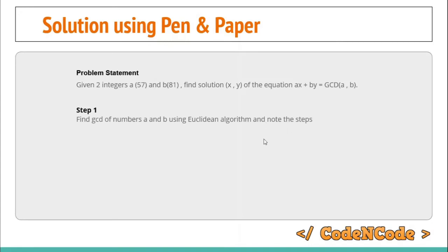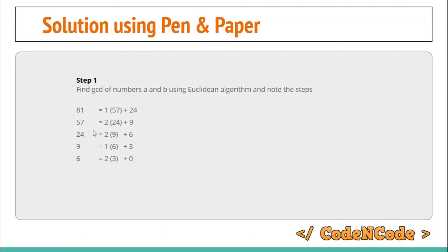These are the steps of the Euclidean algorithm. First: 81 = 1 × 57 + 24. The number in brackets is the divisor and 24 is the remainder when 81 is divided by 57. Next: 57 = 2 × 24 + 9, and so on. The Extended Euclidean Algorithm is actually the reverse of the Euclidean algorithm — you start from the last equation and work upward.